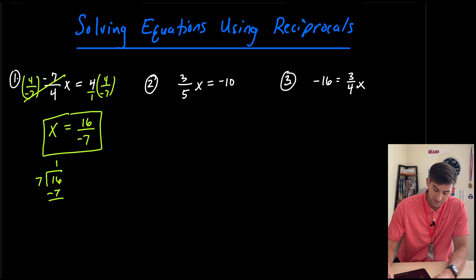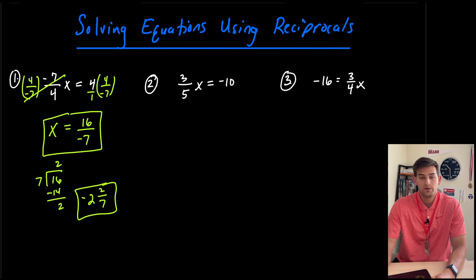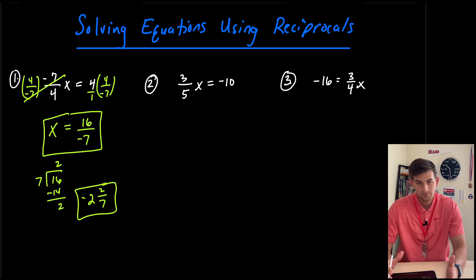That's not going to go in there one time, right? That's going to go in there two times, because two times seven would be 14, and we're left with two over seven. So our answer would be negative, because we had a negative sign. Negative two and two sevenths would be how we could write that as a mixed number.